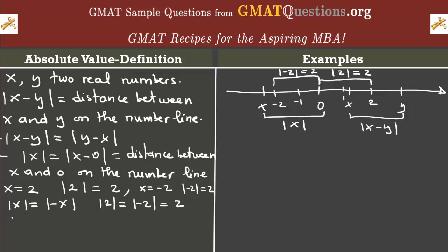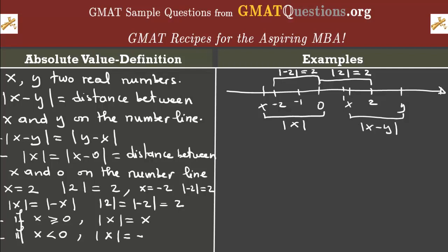This leads me to the next concept in absolute value: if we know the sign of x. For example, if we know that x is greater than or equal to 0, then the absolute value of x is going to equal x itself — we can take x outside the absolute value notation and say the absolute value of x equals x. On the other hand, if x is a negative number, then the absolute value of x is negative x. I'll give you examples of this because it's not always easy to understand why we have a negative sign here.